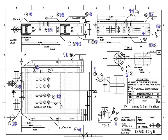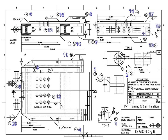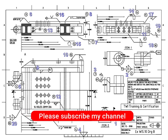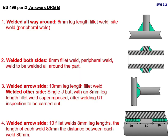This is called an all-around weld. You see the 6 mm leg length — that is the all-around weld. If the fillet size is not mentioned, you have to understand that 6 mm fillet is the minimum requirement, so you write 6 mm fillet.